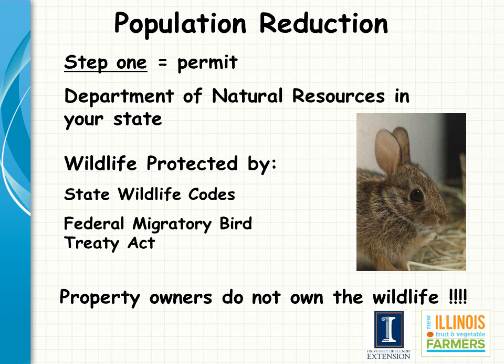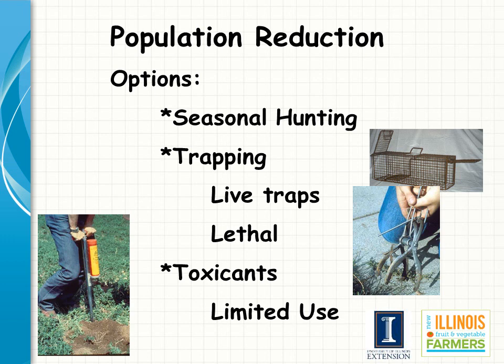Currently, you don't need a nuisance wildlife permit to reduce populations of small rodents such as mice, voles, 13-line ground squirrels, moles, and chipmunks on your property. Population management can also be done through the Illinois hunting or trapping season established each year by the Illinois Department of Natural Resources. This kind of seasonal hunting or trapping can only be done on rural or other property which is not subject to local ordinances restricting this type of activity.